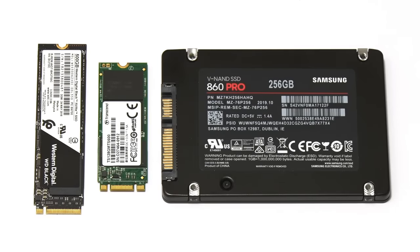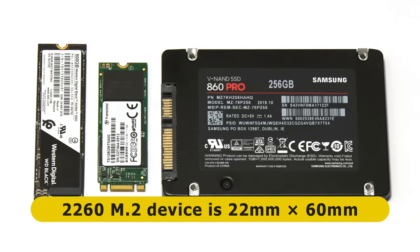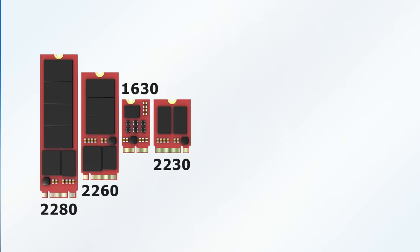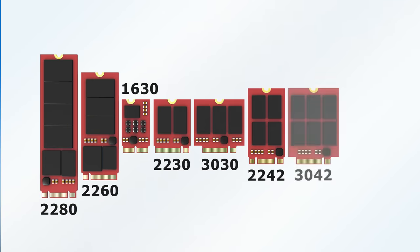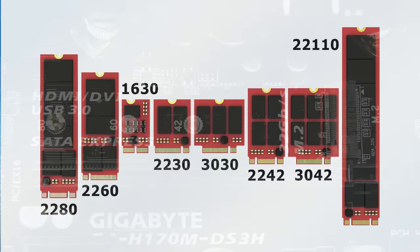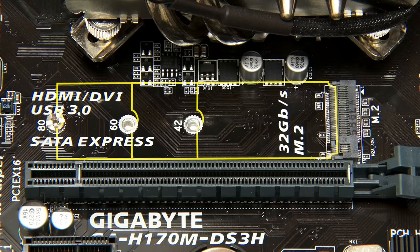M.2 drives usually slot directly into a computer's motherboard and come in a variety of sizes expressed as a code. For example, this is a 2280 M.2 SSD, which means it's 22mm wide and 80mm in length. And this is a 2260 M.2 SSD, which is 22mm wide and 60mm long. Other possible dimensions include 1630, 2230, 3030, 2242, 3042, and 22110, although not all of these are used for M.2 SSDs. When purchasing an M.2 SSD, it is critical to get one which will fit your motherboard, although many motherboard slots can accommodate several M.2 sizes.